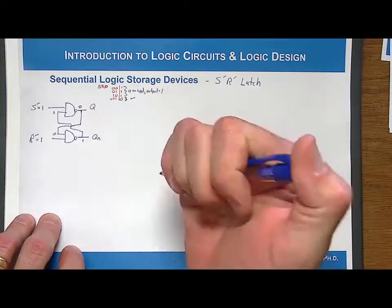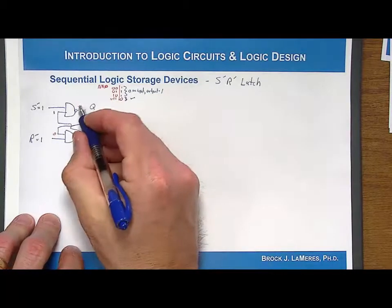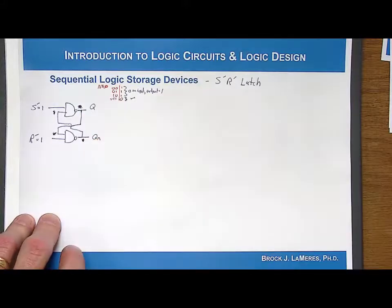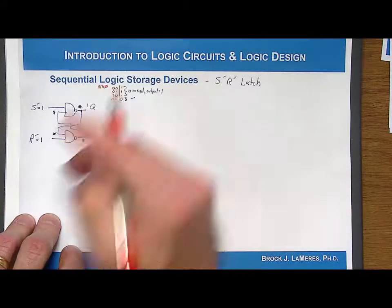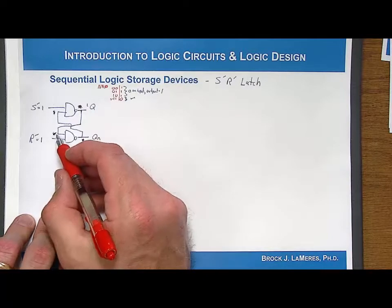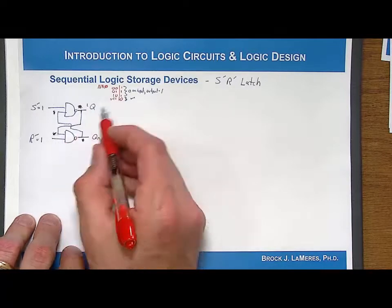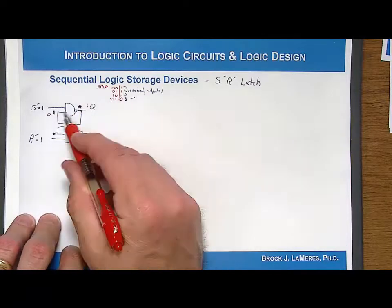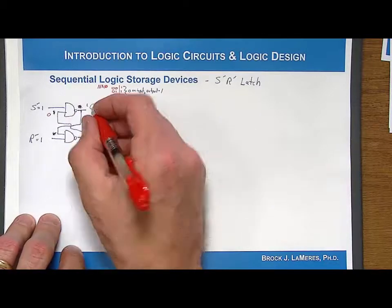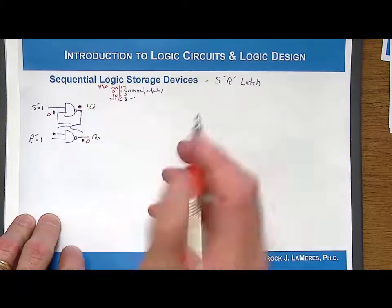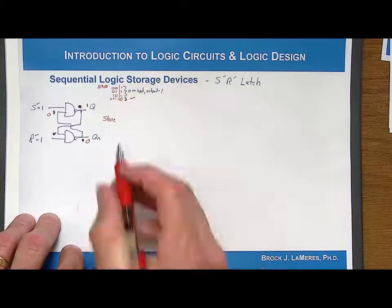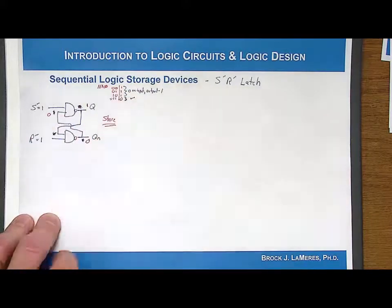Now let's test storing a 1. With Q=1, a 1 and 1 NANDed together produces a 0. That 0 feeds back — any time you have a 0 on an input to a NAND gate it produces a 1 — and that 1 is reinforced. So the device was able to store both a 0 and a 1, when S̄ and R̄ are both equal to 1.